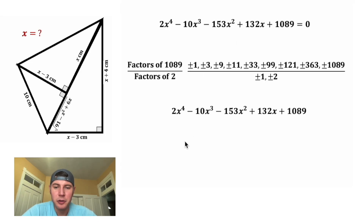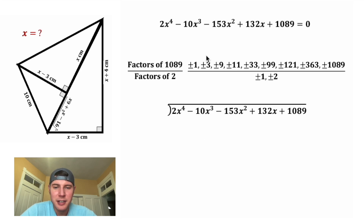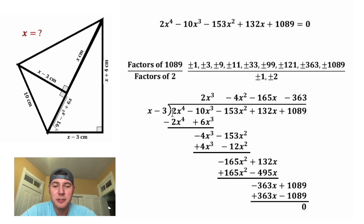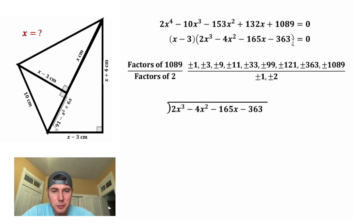Let's copy down the polynomial and do some long division. First let's try x minus 1 — here's all the work — but we can see there is a remainder, so x minus 1 is not a factor. Next let's try x minus 3 — luckily this gives a remainder of 0, so x minus 3 is one of the factors. So we factor out (x minus 3), and the quotient is the other factor. This is all still equal to 0, and we can keep going with the remaining piece.